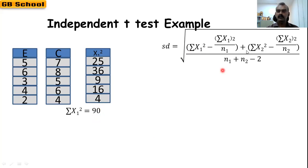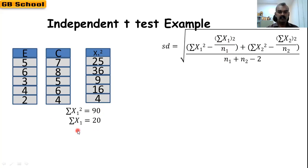We already know the sum of x₁ = 20 and n₁ = 5, so this part of the formula gives us 4.